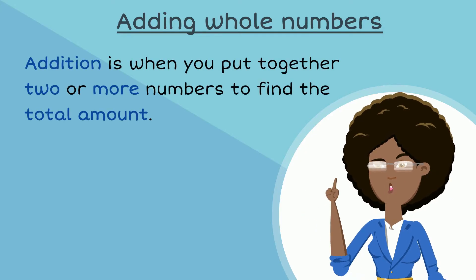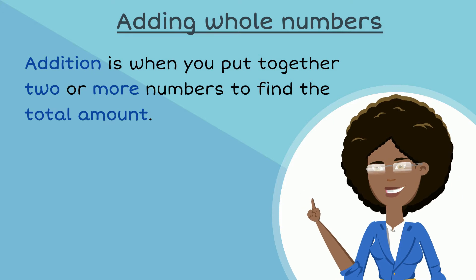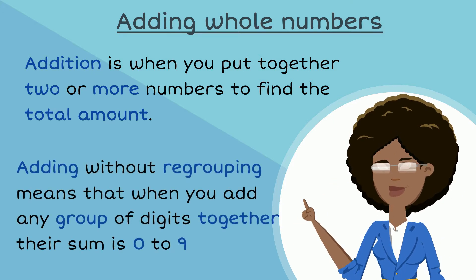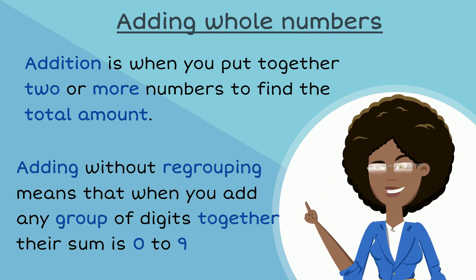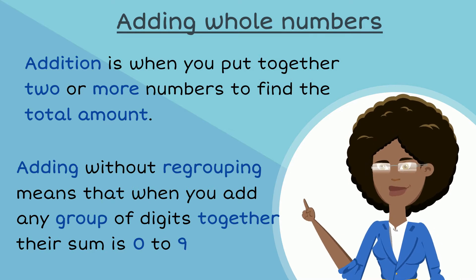Addition is when you put together two or more numbers to find the total amount. Adding without regrouping means that when you add any group of digits together, their sum is zero to nine.